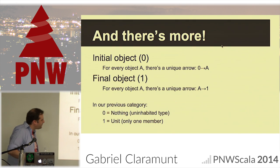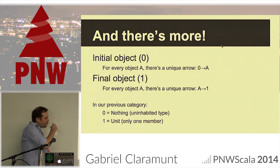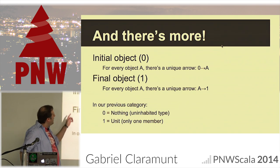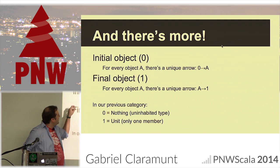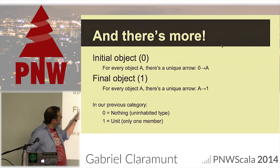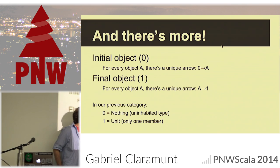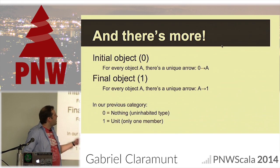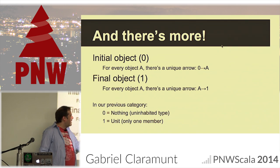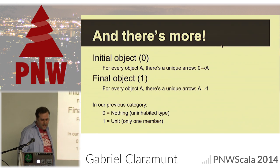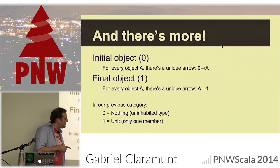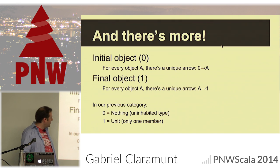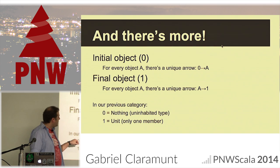There are more things in a category. Sometimes — not all categories, but some — have initial objects. That means for every object in the category there is only one arrow that goes from the initial object to any other object. Conversely, there is the final object: from every object there is a unique arrow that goes to the final object. In our category of types and functions, Nothing is our initial object and Unit is the final object.